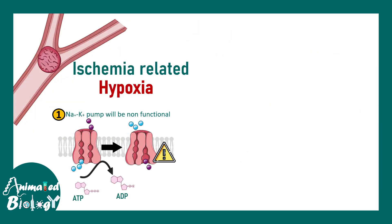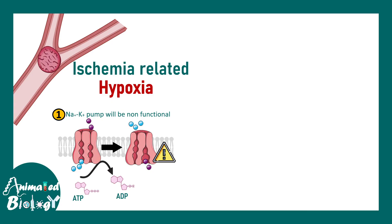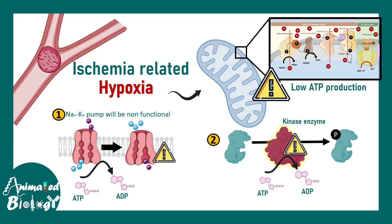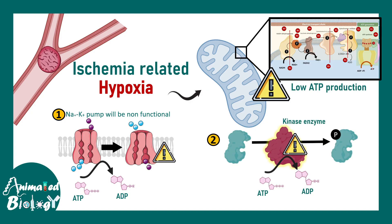Under hypoxic conditions, the backup option is to generate some ATP via glycolysis. With significantly low ATP, channels such as the sodium-potassium ion exchange pump, which requires ATP for its functionality, are not performing optimally. Also, kinase enzymes are not functioning properly — a pathway such as the MAP kinase pathway, which has a kinase cascade, would be totally altered under low ATP.